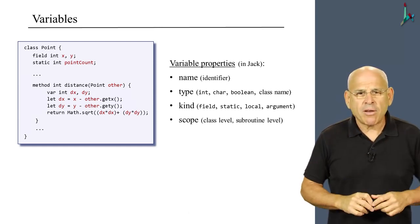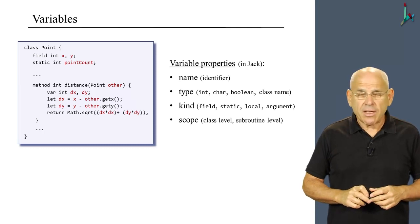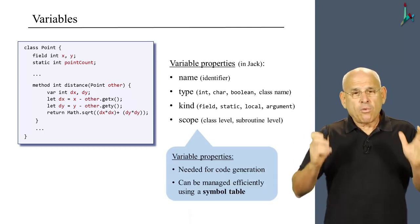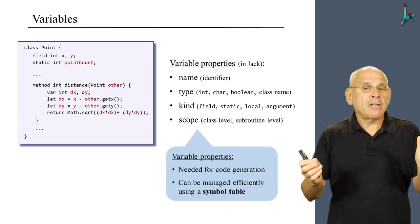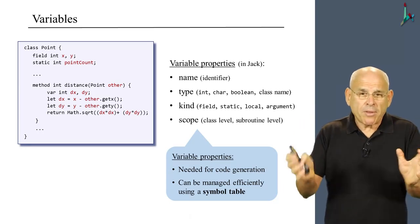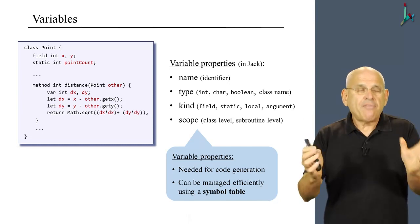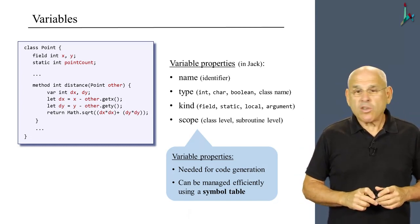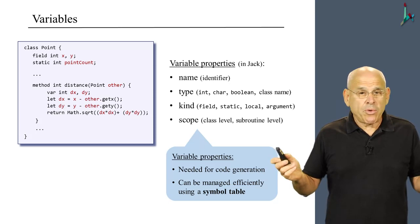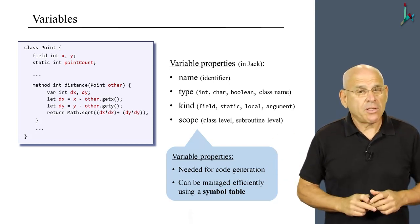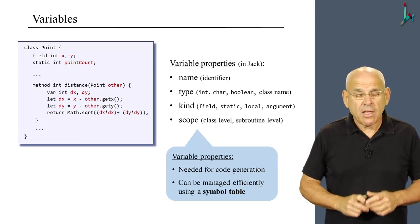We'll have more to say about scoping rules later on in this unit. So, taken together, what we have here is a bundle of variable properties that must be maintained for every variable that occurs in the source code. How should we do it? How can we manage this information about the variables?